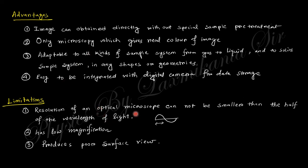The limitation of optical microscopy is that you cannot obtain crystalline size information. This is because light has a wavelength of 4,000 to 8,000 Angstroms, but the actual interplanar spacing is nearly 10 Angstroms — there is a huge size difference. That is the most important limitation of the optical microscope.